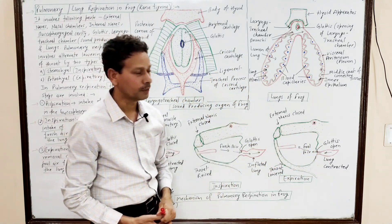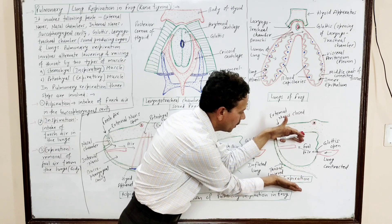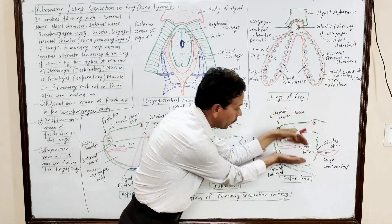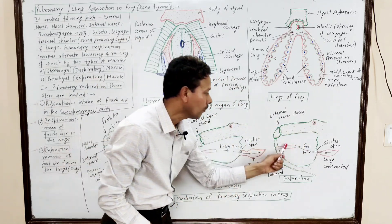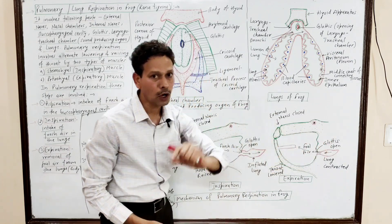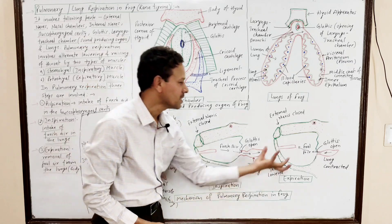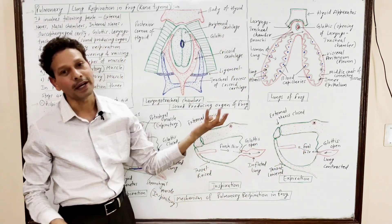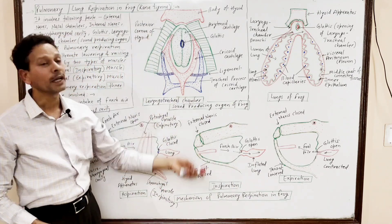In the second step of expiration, the glottis is closed and the buccal-pharyngeal cavity is raised and reduced in size. Pressure develops, and the external nares open. As a result, the foul air gets expired. This is all about pulmonary respiration.